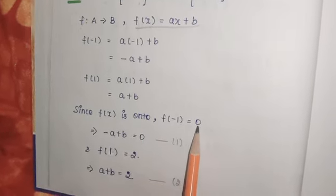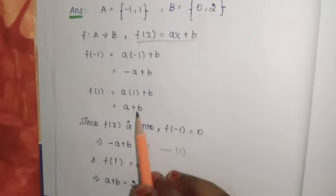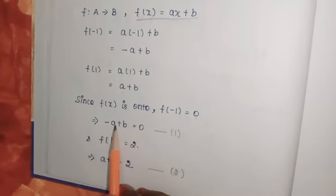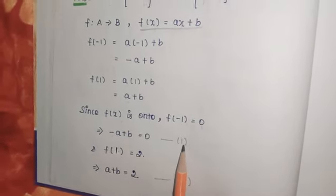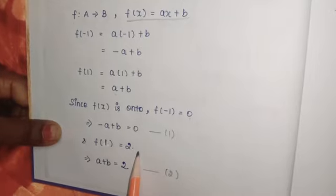Since f(x) is onto, f(-1) = 0. So -a + b = 0. And f(1) = 2.